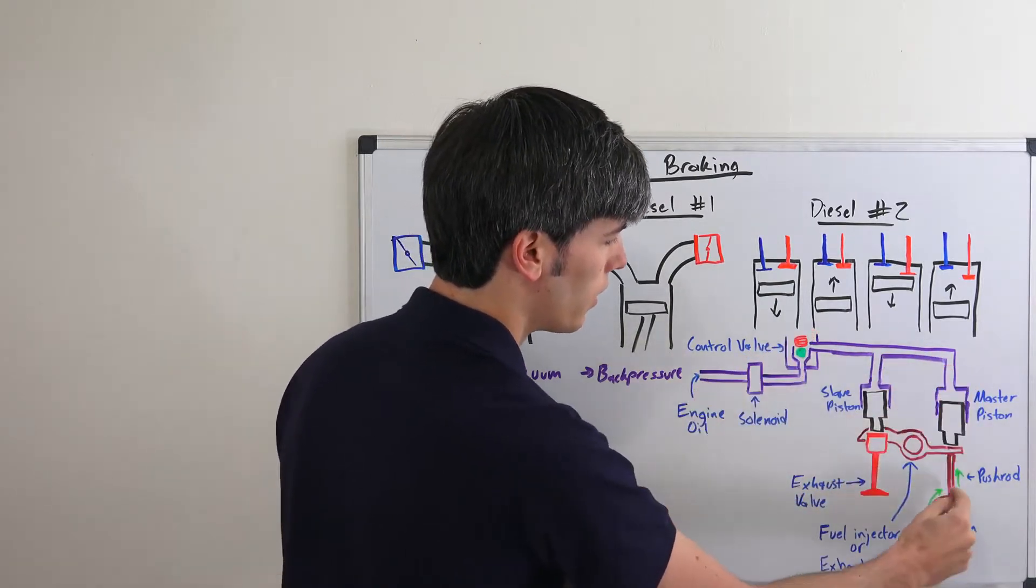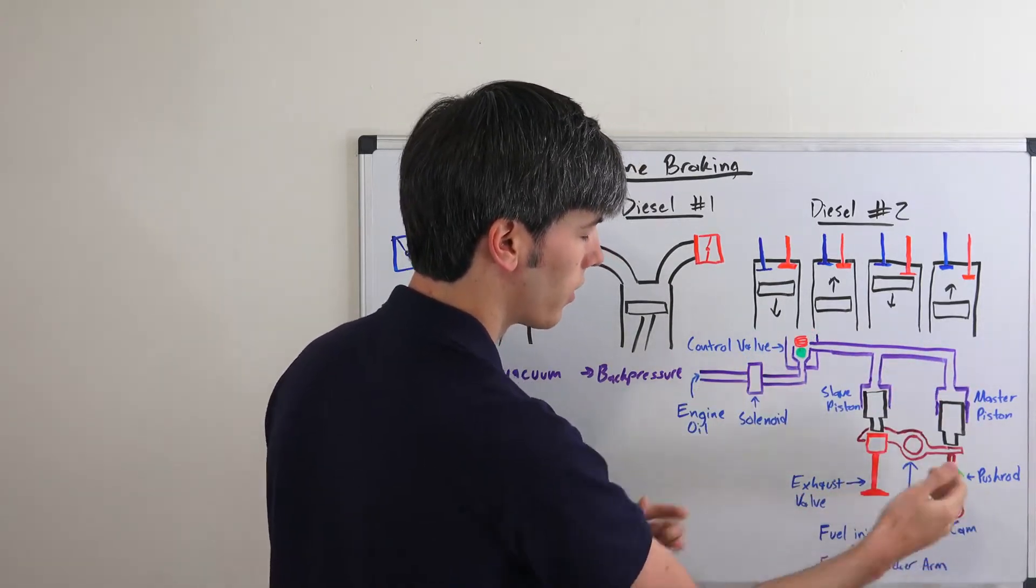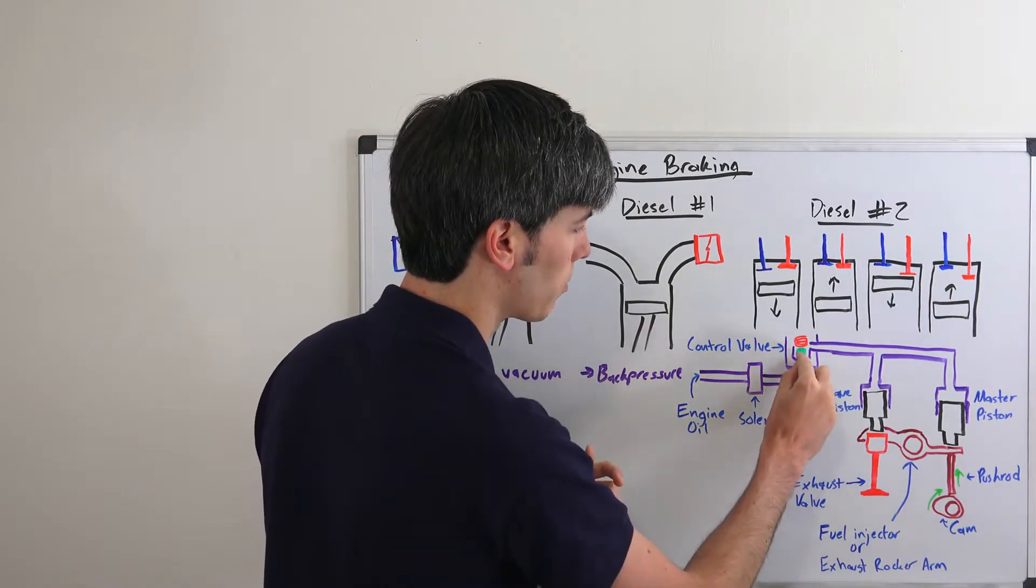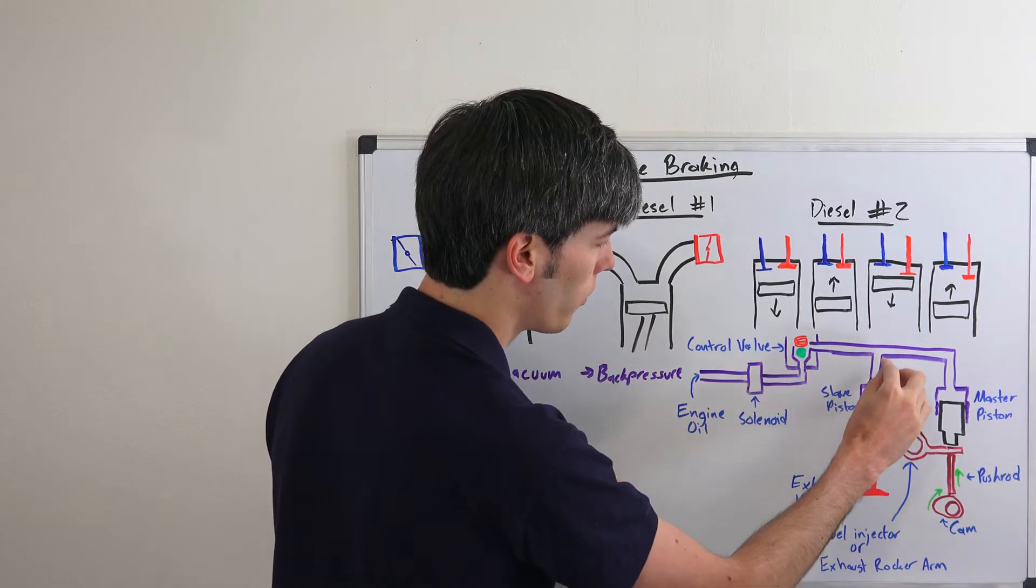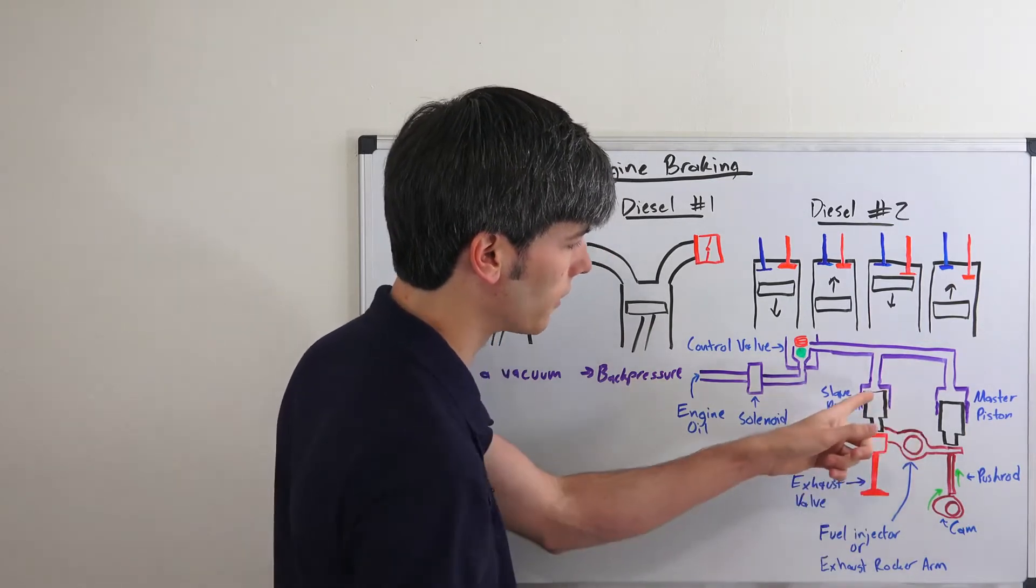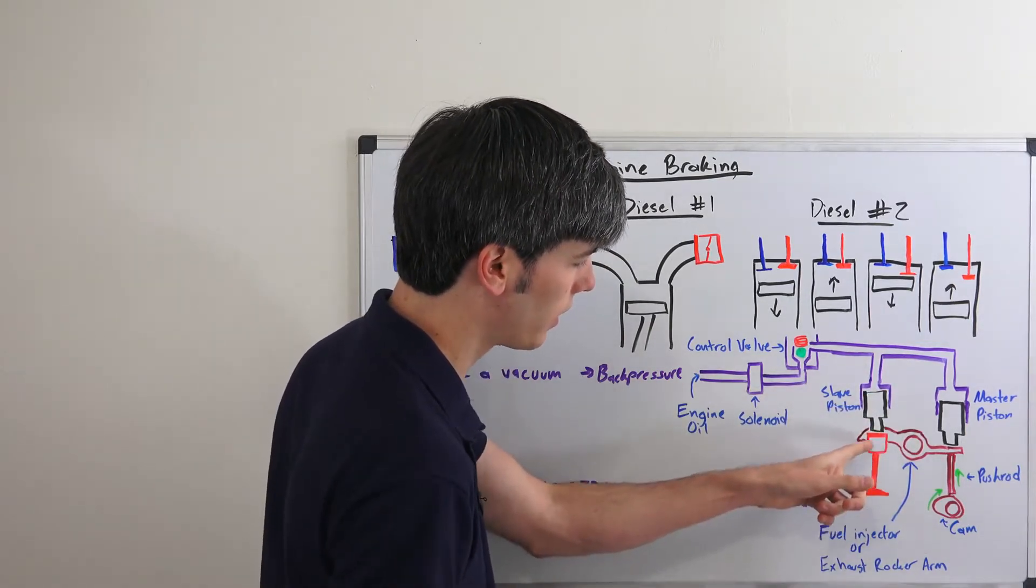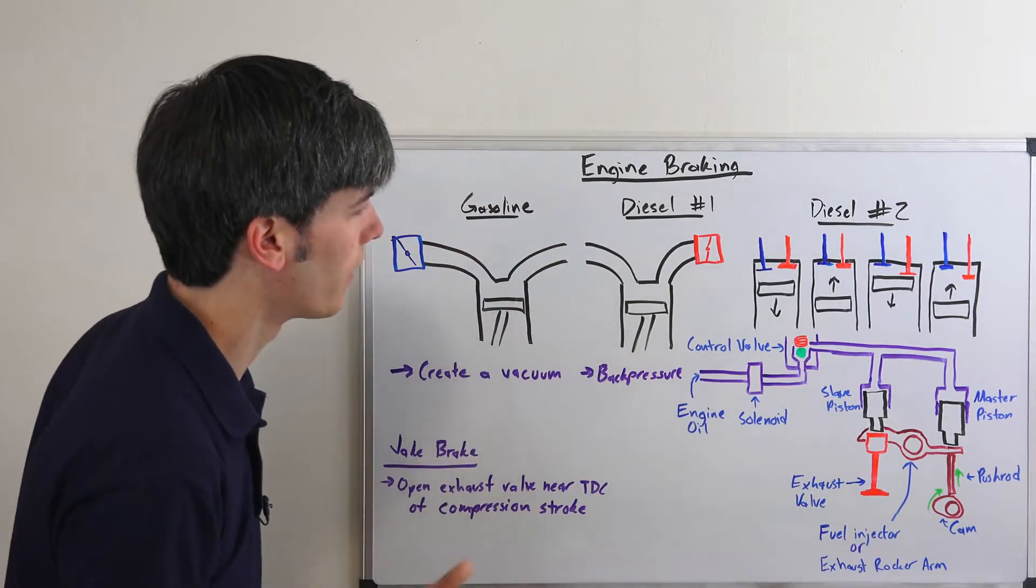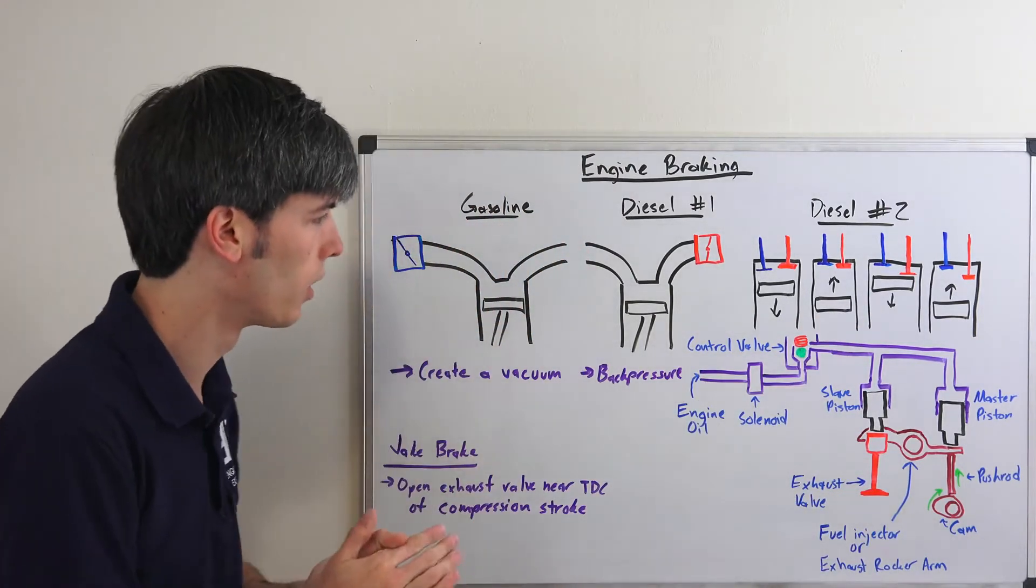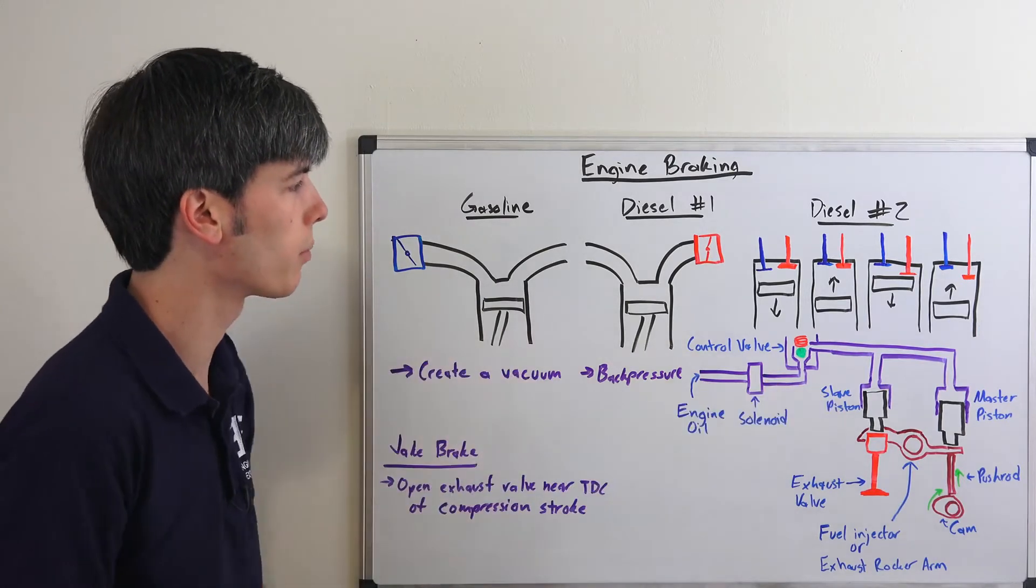You've got pressure built up in here. You can't push this cam down—I mean that's a hard contact right there—and you can't push any flow through this. So the only way the oil pressure can move is by moving this slave piston down. So it moves that slave piston down, which opens up the exhaust valve there at top dead center, and then you have your engine braking system working functionally. So that's how a jake brake system works.